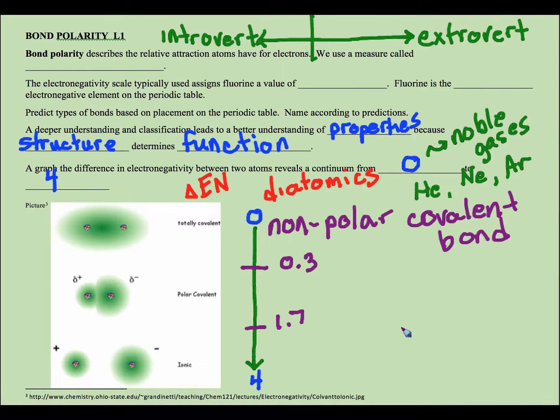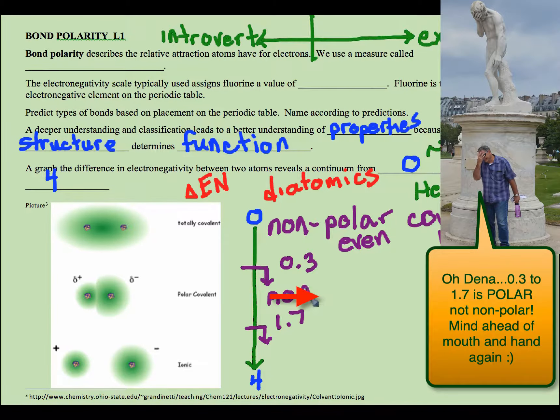In other words, it's a pretty even sharing of electrons. The next line in the sand would be greater than or equal to 0.3, this is still going to be classified as a covalent bond up to 1.7, but we're going to call it a polar covalent. Covalent has sharing, but this time we're talking about uneven sharing of electrons.